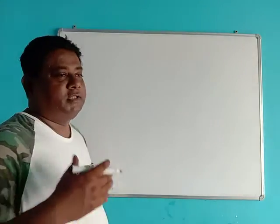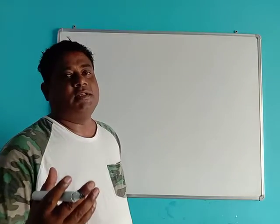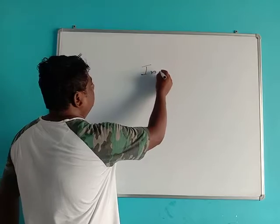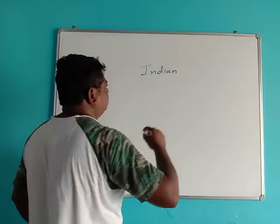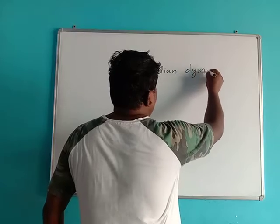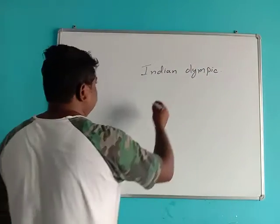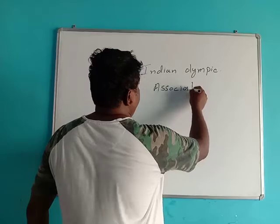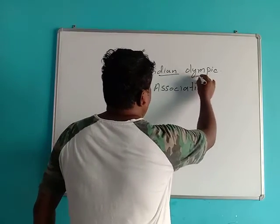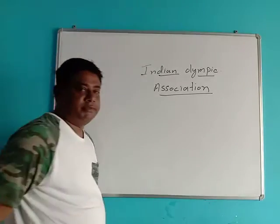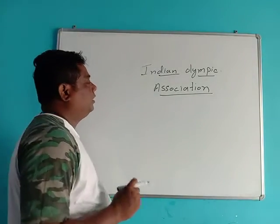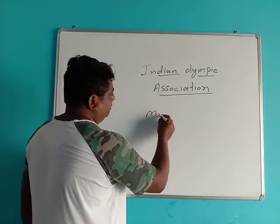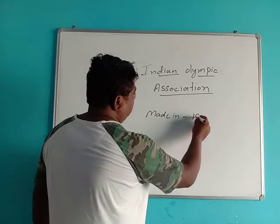Today, we will see in this lecture what is the Indian Olympic Association. The Indian Olympic Association was made in 1927.